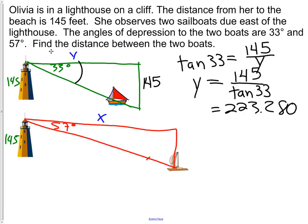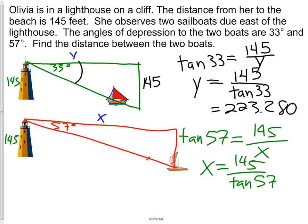Now we have to start over again. We have to do the exact same problem for the other boat. So we're going to go tangent of 57 is equal to opposite, which is our 145, over our adjacent, which is X. Solving that for X, we're going to get 145 over tangent of 57. Again, we go to our calculator and divide 145 by tangent 57. And you will get 94.164.